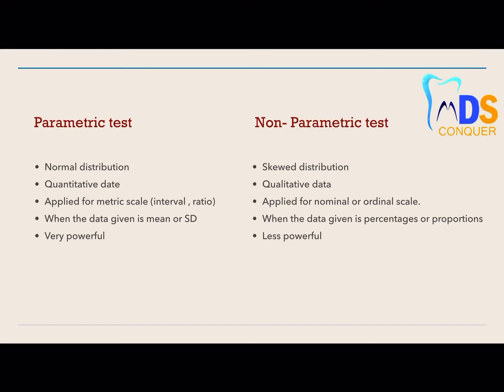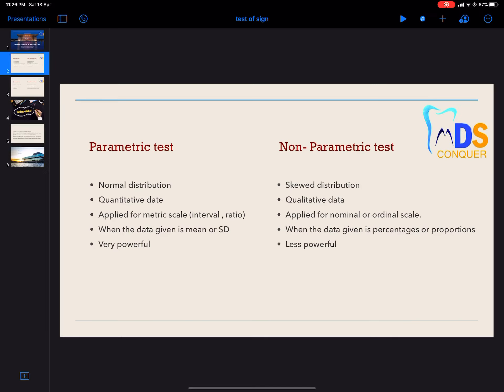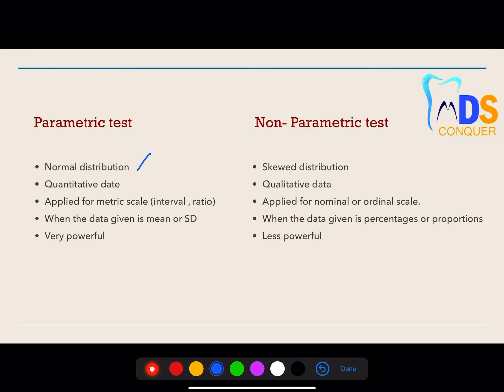If you go in detail into tests of significance, they are categorized into parametric tests and non-parametric tests. Parametric tests are used when the given data follows the normal distribution. Normal distribution is a curve in which the mean equals the median equals the mode.